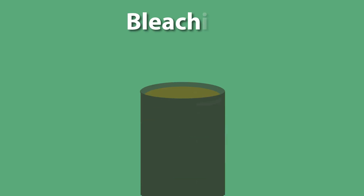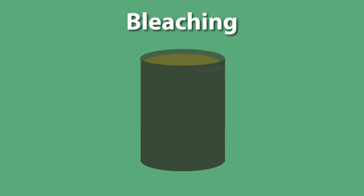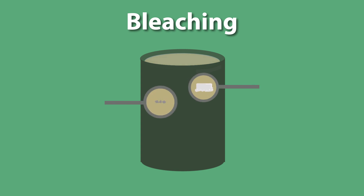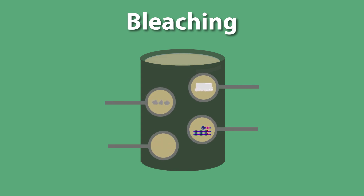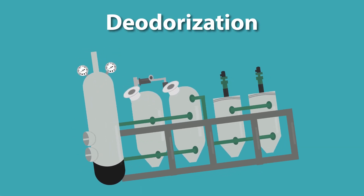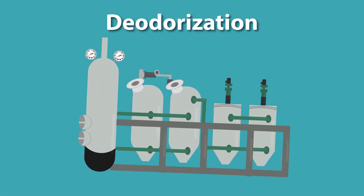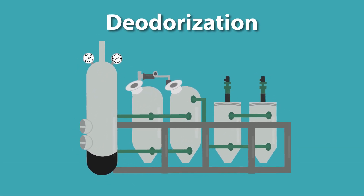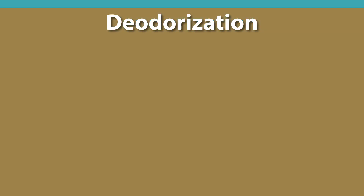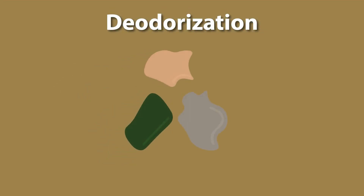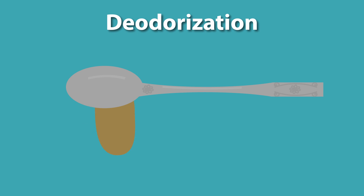The primary purpose of bleaching is to remove the color pigments from the oil. It also helps to remove remaining soap, trace metals, phospholipids, and sulfur compounds. Deodorization is the final processing step before the oil is ready for use in food products. The deodorization removes the trace components that give the oil an unpleasant taste and odor.